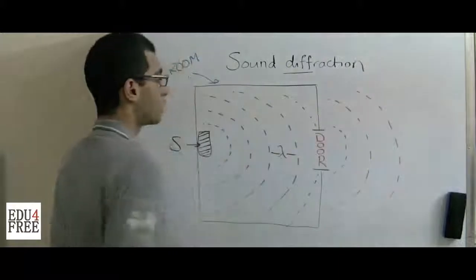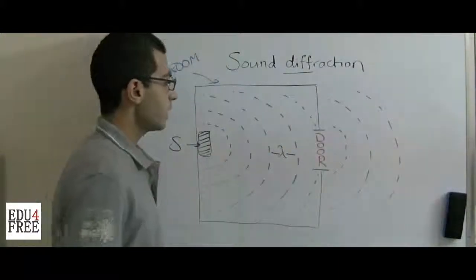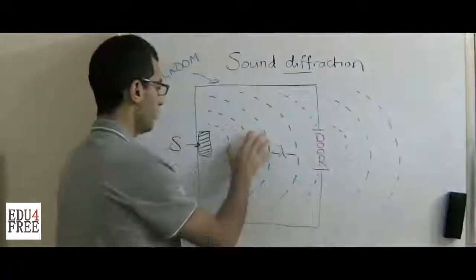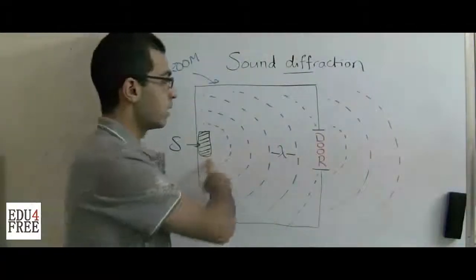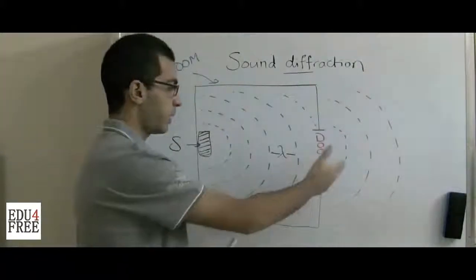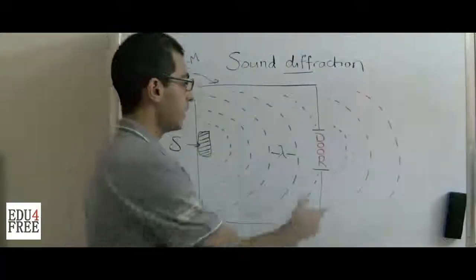So when the opening is small relative to the wavelength of the sound wave, this leads to the diffraction of sound waves. So if somebody is standing in the other room outside this room where the source is found...